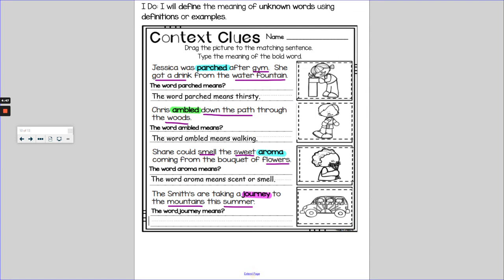So I'm going to write my sentence. The word journey means trip. Or we could say to take a trip. It doesn't have to be one single word. It can be a bigger definition.